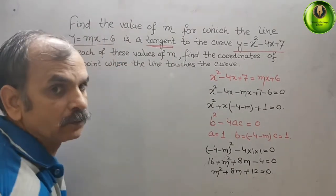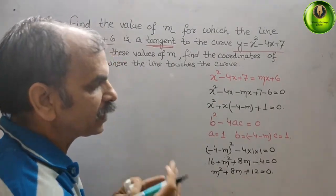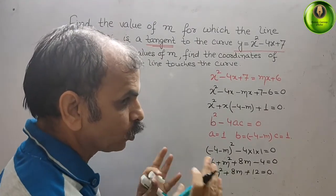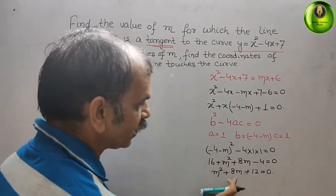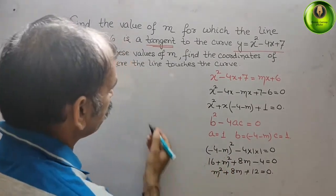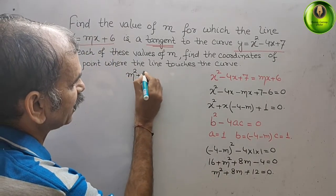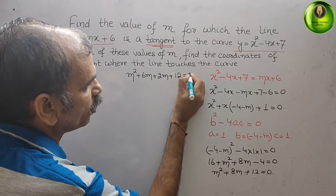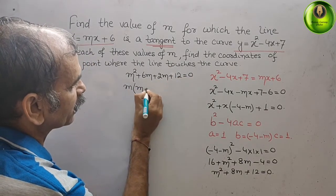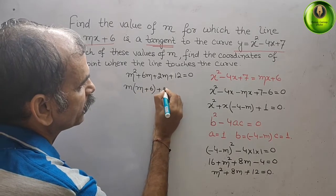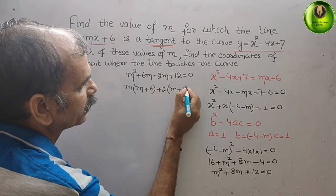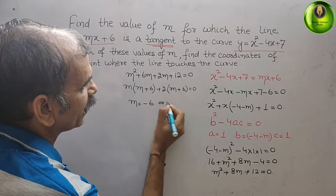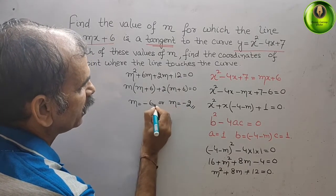Using middle term splitting: we need two numbers that multiply to 12 and add to 8, which are 6 and 2. So: m² + 6m + 2m + 12 = 0, giving m(m + 6) + 2(m + 6) = 0. Therefore m = -6 or m = -2.